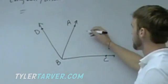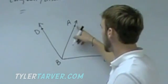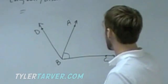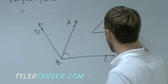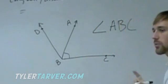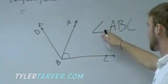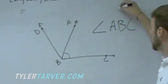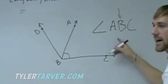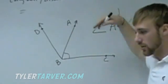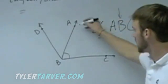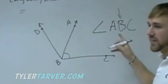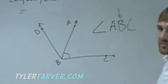When you label angles, say we want to talk about angle ABC — we would write angle ABC. When you label an angle, you put the little angle symbol in front and all three points involved. The important thing is that the middle point has to be the vertex, where it changes directions. That's what labels how the angle is.